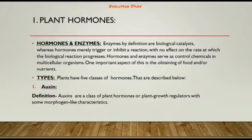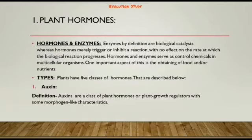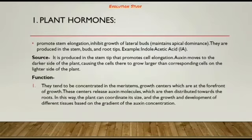Hormones and enzymes serve as chemical controls in multicellular organisms. Plants have five classes of hormones. Auxins, by definition, are a class of plant hormones or plant growth regulators with some morphogen-like characteristics which promote stem elongation and inhibit the growth of lateral buds, maintaining apical dominance.